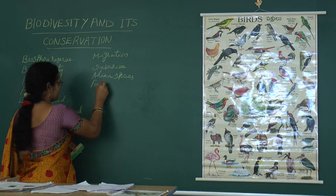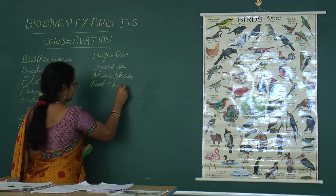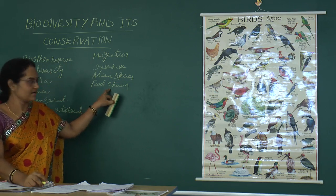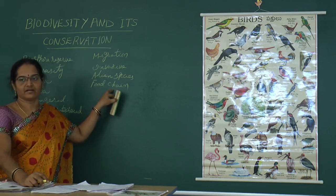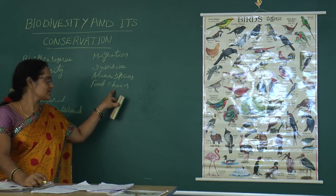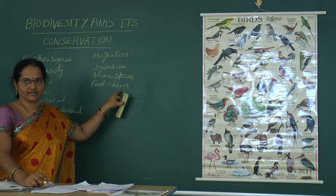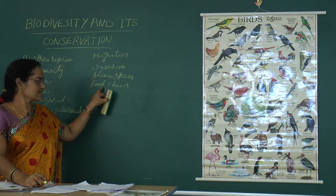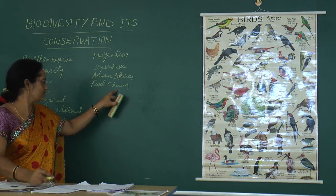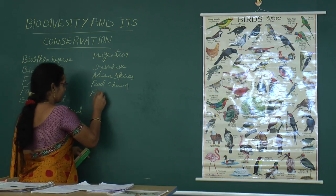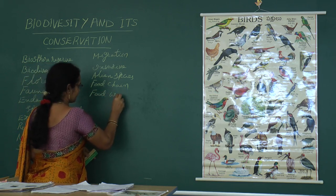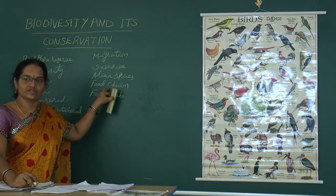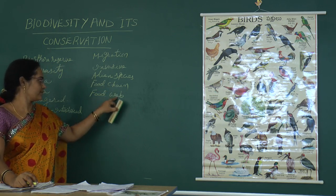Next: food chain. The interaction between producers and consumers is known as a food chain. The interrelationship among producers and consumers is known as a food chain. Next: food web. The interlinking between various food chains is known as a food web.